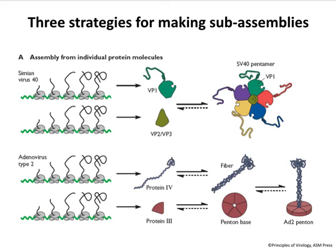Another example is adenovirus — an icosahedral virus with interesting fibers at each five-fold axis of symmetry. The cell translates viral mRNAs encoding protein 4, which forms a fiber: three copies of protein 4 come together to form a fiber, which is a subassembly. The penton base, where this fiber fits on the capsid, is made up of five copies of protein 3 — itself a subassembly. Then the two subassemblies come together to form another subassembly. Protein 4 alone is just a single protein; the fiber is a subassembly, the penton base is a subassembly, and so is the penton.